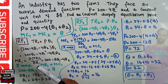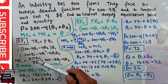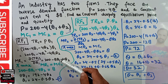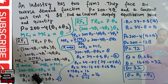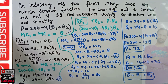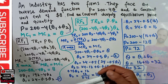The profit-maximizing condition for each individual firm is to equate marginal revenue with marginal cost. Setting MR1 = MC: 200 minus 8Q1 minus 4Q2 = 8. Solving for Q1, we get the reaction function of firm 1: Q1 = 24 minus 0.5·Q2.